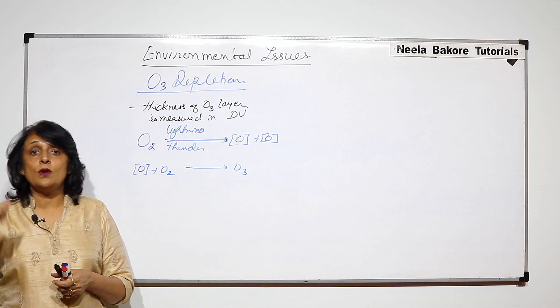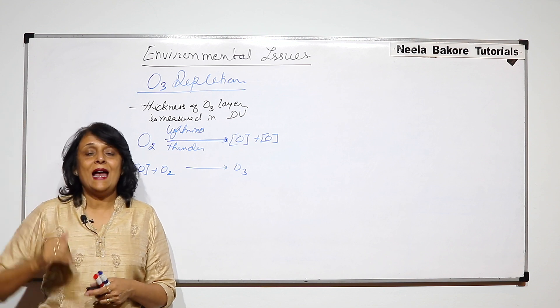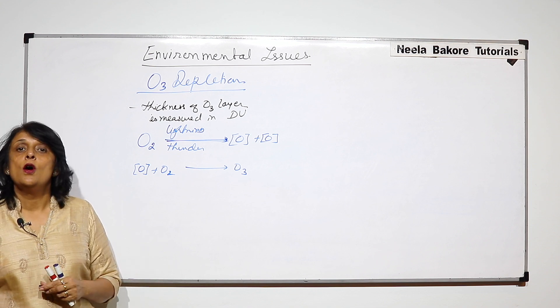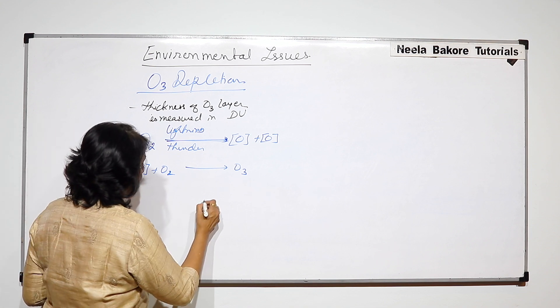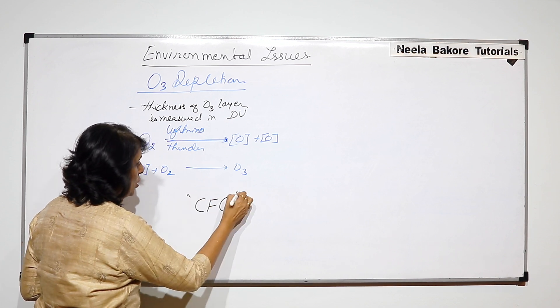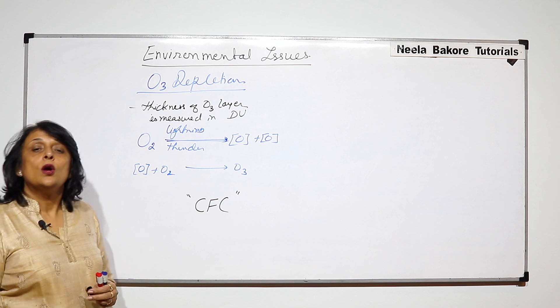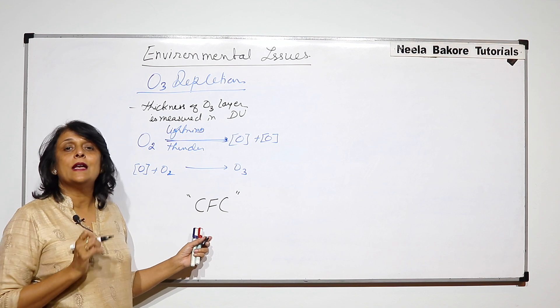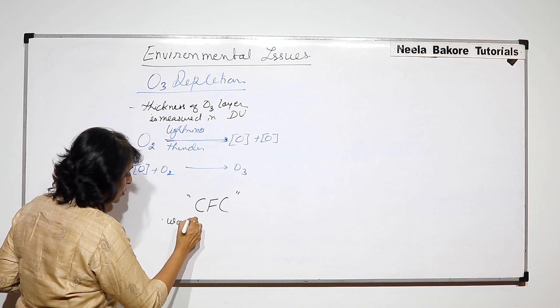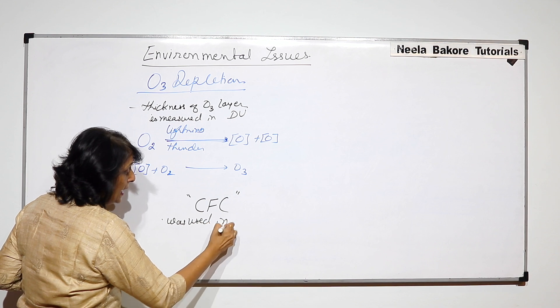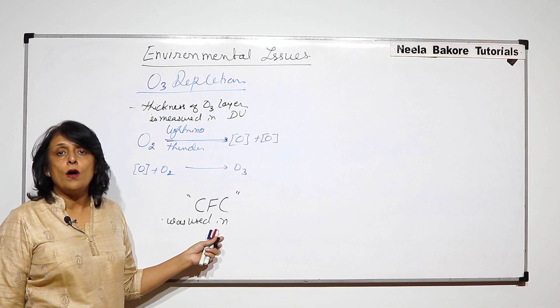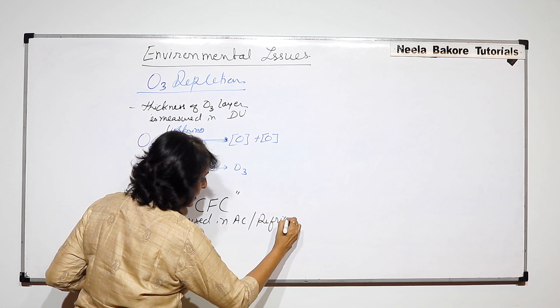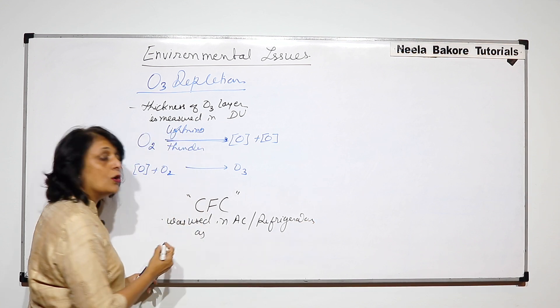Formation of ozone layer is normally from the top and depletion is from the bottom. One substance which is responsible for ozone depletion is CFC, chlorofluorocarbon. I am using 'was' because now it has been banned. It was used in air conditioners or refrigerators as a coolant.